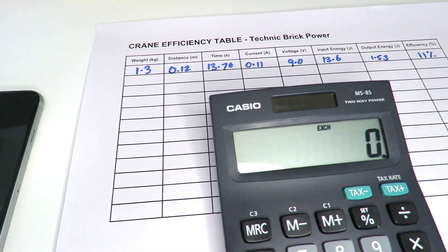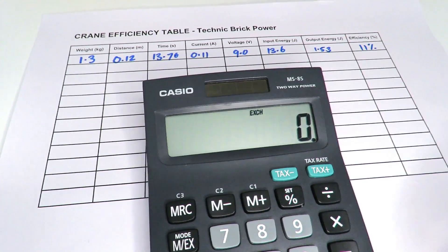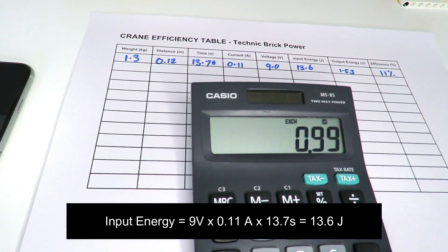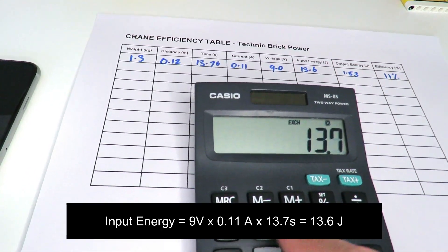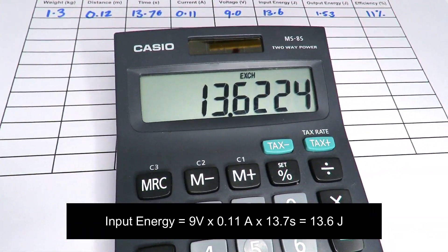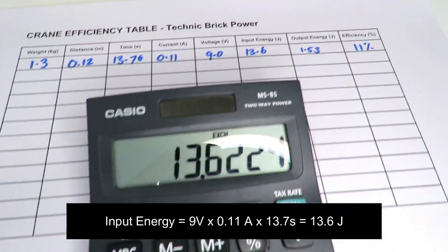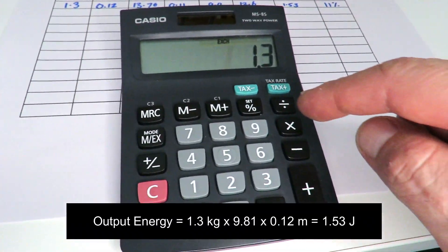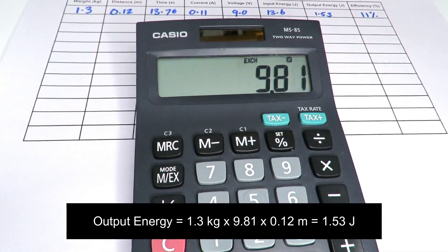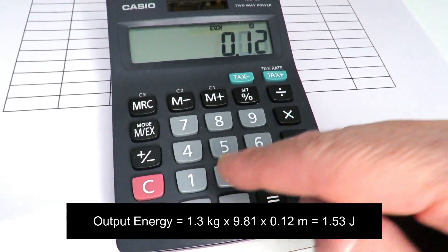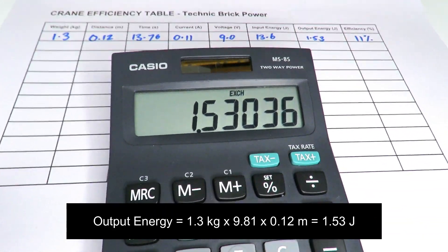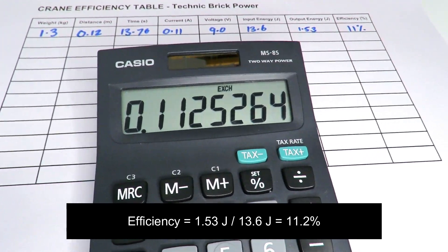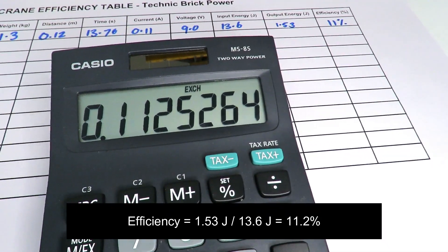Okay, I've written down those numbers, and to work out the input energy into the system, we just need to multiply out the voltage, which was 9 volts, by the current of 0.11 times the amount of time that that power was applied, which was 13.76 seconds. Gives us a result of 13.6 joules, which I've written down at the top of the sheet there. And then the output energy was the weight, which is 1.3 times 9.81, which is the gravitational constant of the earth, multiplied by the distance of 0.12. So that gives us 1.53 joules of output, and we divide that by the input energy, 13.6. Gives us an efficiency of 11%, which is not a heck of a lot. But it's better than nothing I guess.